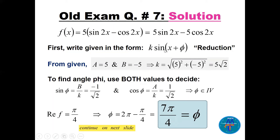Multiplying out, the function is 5·sin(2x) − 5·cos(2x). In the reduction identity form k·sin(x + φ), we identify a = 5 (coefficient of sine) and b = −5 (coefficient of cosine, but here the coefficient of cosine in the original is −1 and then scaled by 5). Then k = √(a² + b²) = √(25 + 25) = √50 = 5√2.